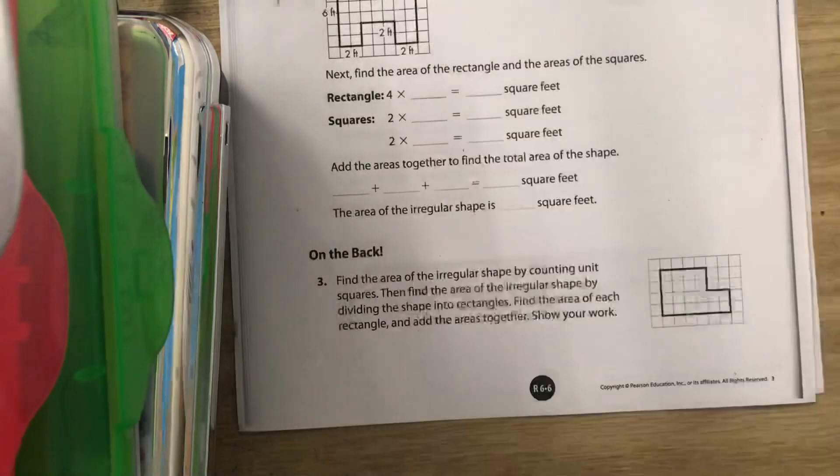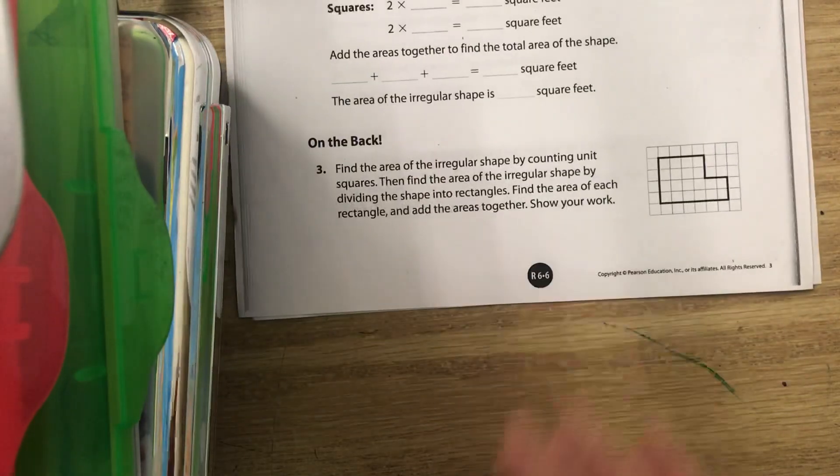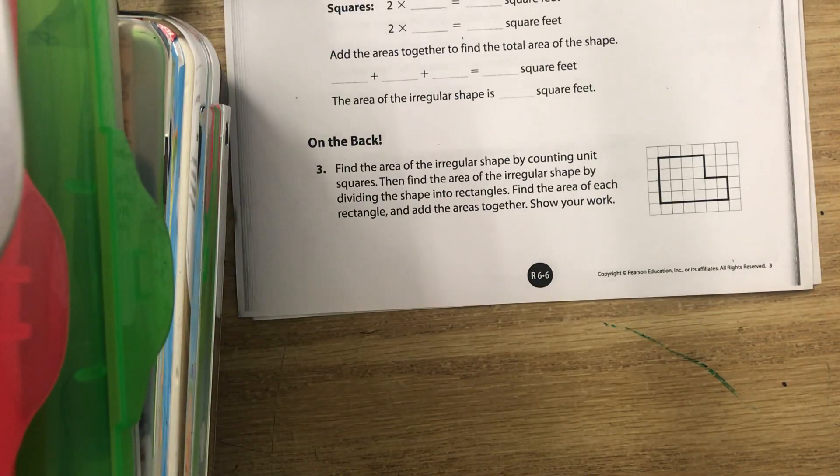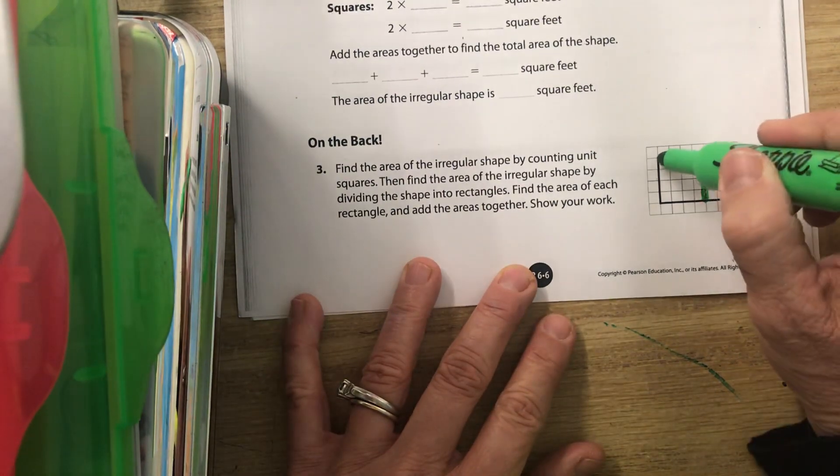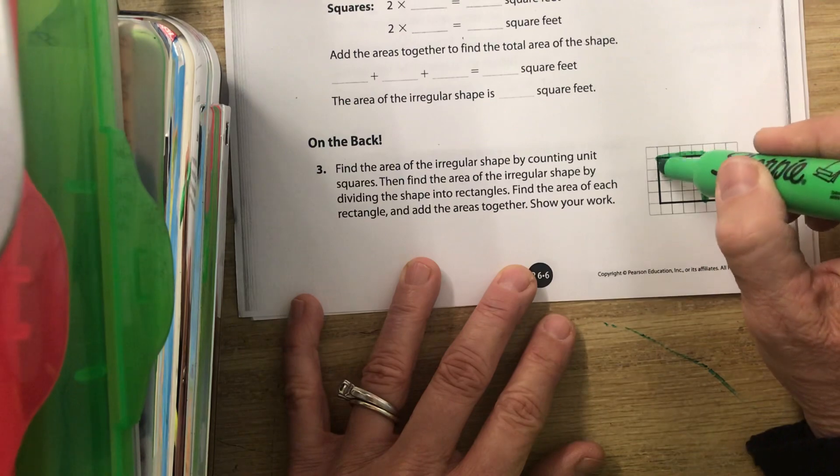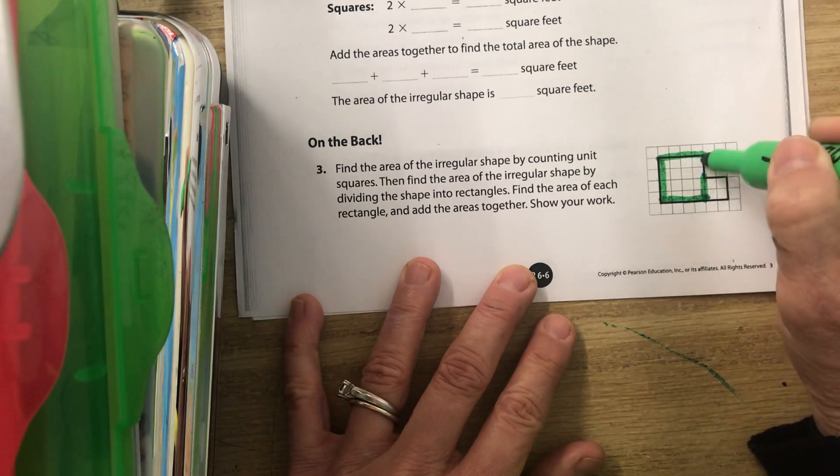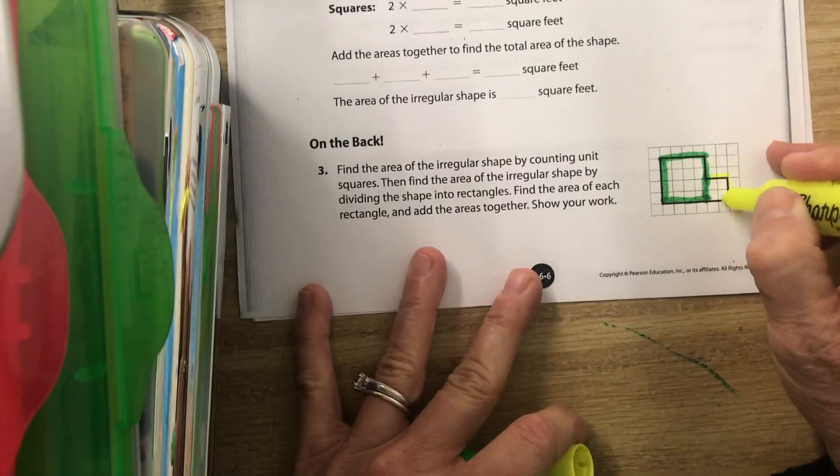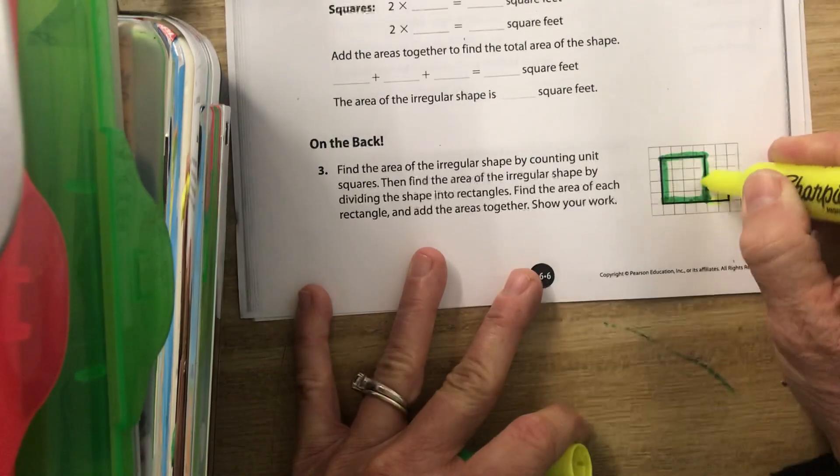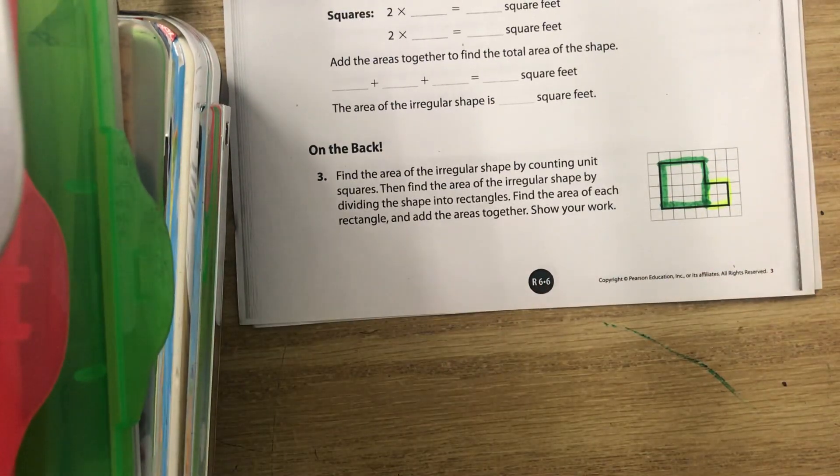Now there's one more way we could have done this one at the bottom. Let's just take a look at it. Imagine if I drew the line like that. So I made it—it's really a square and a rectangle. I want you to pause the video and calculate the area of that.